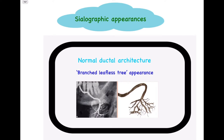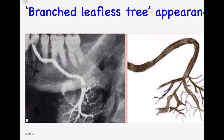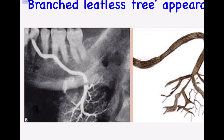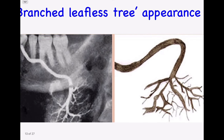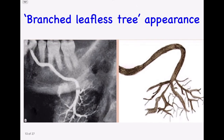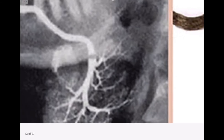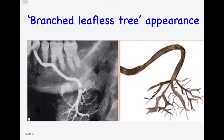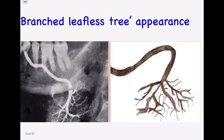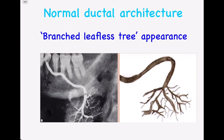Sialographic appearances are the most important part of this topic from an exam point of view, as MCQs or short answer questions may be asked. The normal ductal architecture has the appearance of a branching leafless tree. In the sialographic image of the submandibular gland shown here, the dye has flowed into the main ductal system and its peripheries, clearly resembling a branching leafless tree.